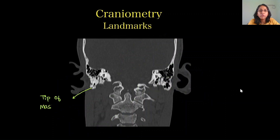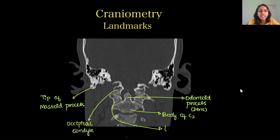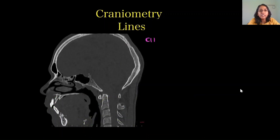On the coronal sections, we can see the tip of the mastoid process, the occipital condyle, the odontoid process or the dens, and the body of C2. The lateral masses of the atlas are visible bilaterally. These structures form the craniovertebral junction.